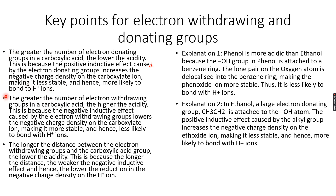The greater the number of electron-withdrawing groups in a carboxylic acid, the higher the acidity. This is because the negative inductive effect caused by the electron-withdrawing groups lowers the negative charge density on the carboxylate ion, making it more stable and hence less likely to bond with H+ ions. The longer the distance between the electron-withdrawing groups and the carboxylic acid group, the lower the acidity, because the longer the distance, the weaker the negative inductive effect, and hence the lower the reduction in negative charge density on the carboxylate ion.